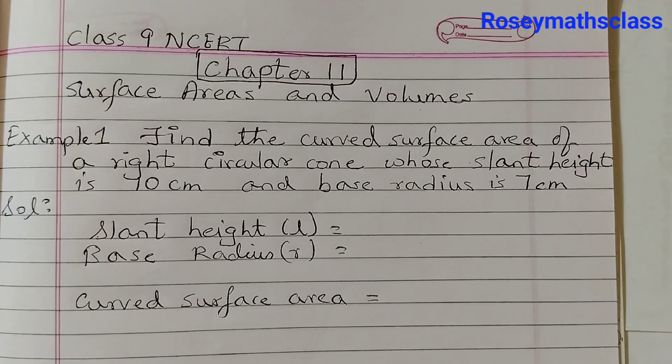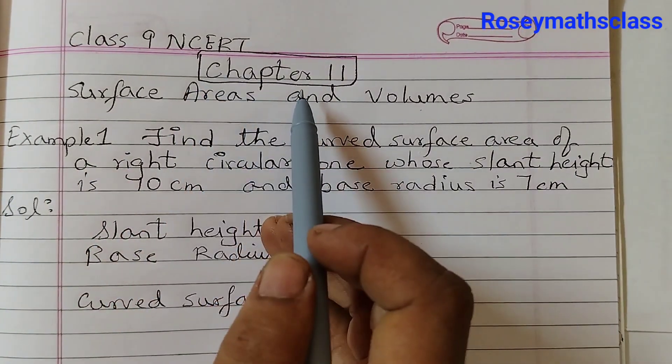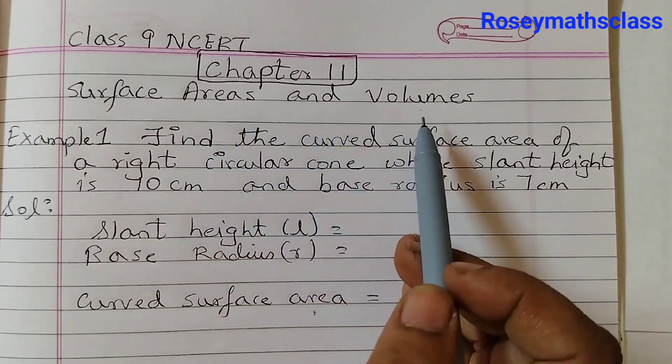Hello students, welcome back to Rosie Maths class. Today we shall discuss example number 1 of Class 9 NCERT Math Chapter 11, Surface Areas and Volumes.